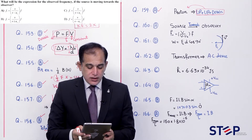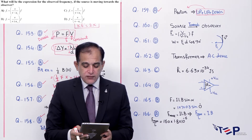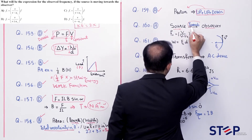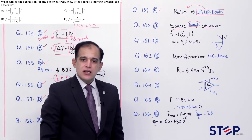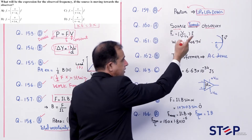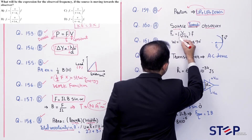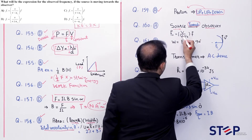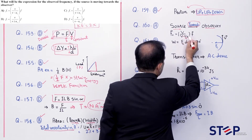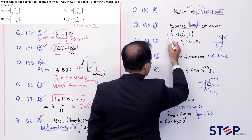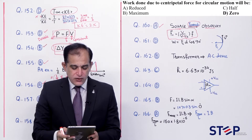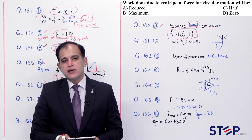Question number 160: Expression for observed frequency when source is moving towards the observer. Apparent frequency real frequency se larger hogi. Formula: f' = f × v/(v - us), jahan us speed of source hai. Denominator mein (v - us) hoga taake frequency badhe. Correct option: Alpha.